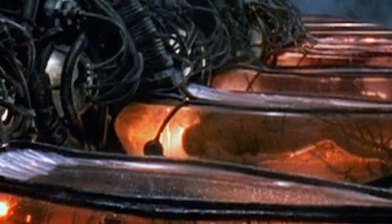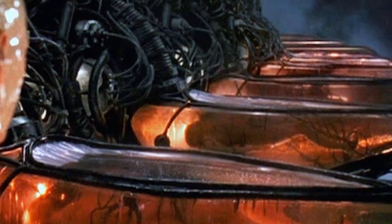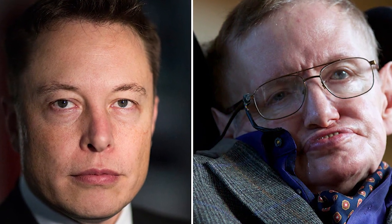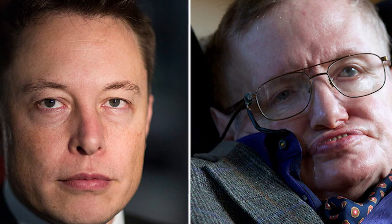So, could we eventually become mere batteries powering the machines, akin to The Matrix? Both the late Stephen Hawking and Elon Musk have expressed concerns that artificial intelligence might supplant humans as the dominant force on Earth. Hawking warned that AI could take off on its own and redesign itself at an ever-increasing rate with profound implications for the future of humanity.